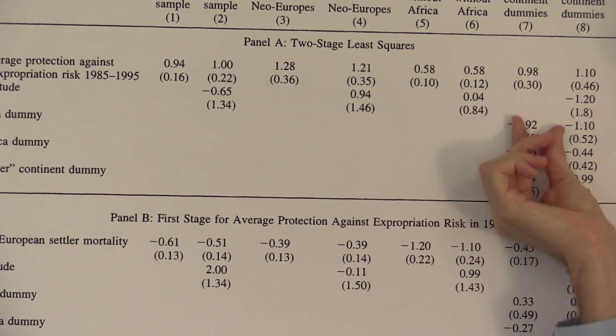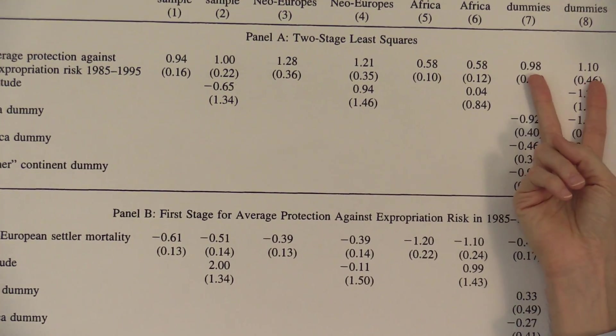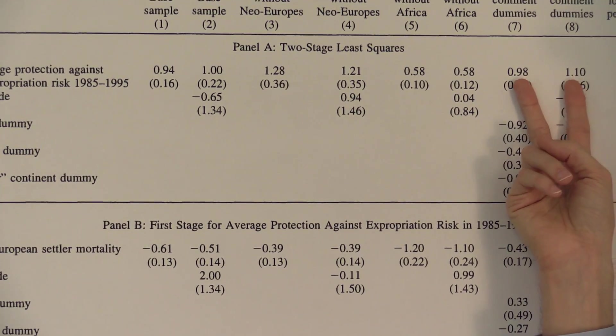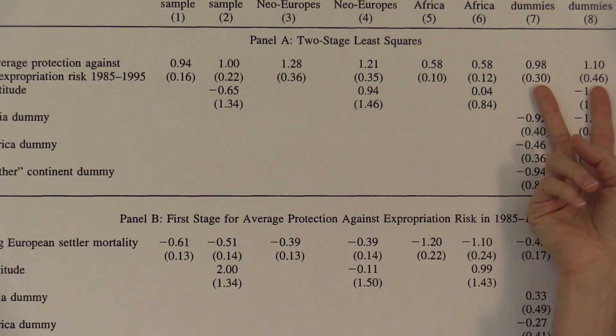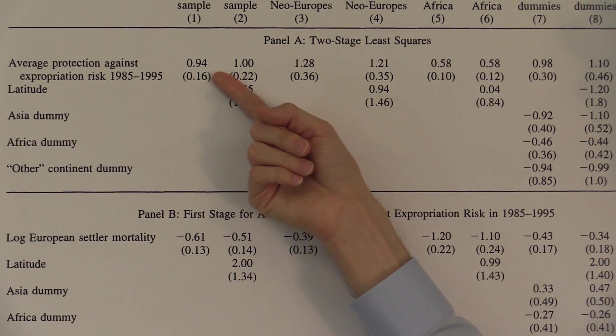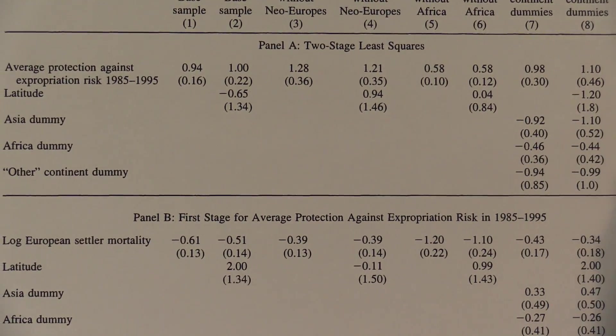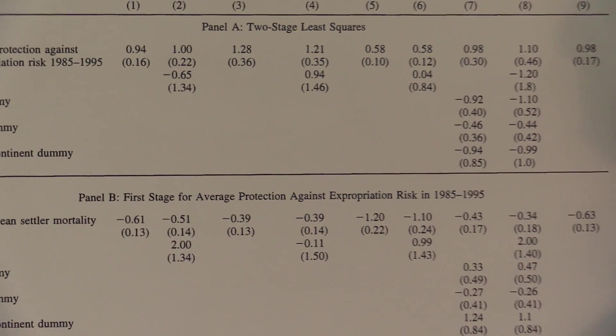We talked about that in the regression module. So they're going to include variables like latitude and what continent you're on in other specifications, like over here. And they're going to see that the coefficient on the treatment variable is still positive and statistically significant among all of their specifications. So that's the main results in this paper.